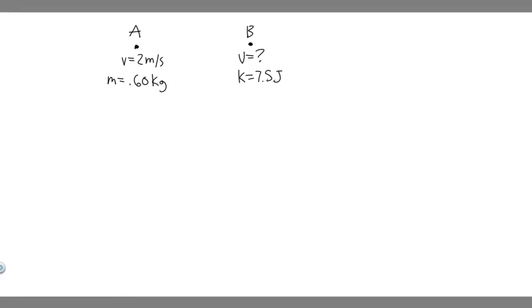In this problem, we're told a 0.6 kg particle has a speed of 2 m per second at point A, and a kinetic energy of 7.5 joules at point B. What is A, the kinetic energy at point A; B, its speed at point B; and C, the total work done on the particle as it moves from A to B?